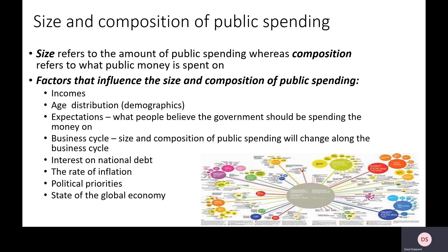Expectations also matter — what people believe the government should be spending money on. With COVID-19, the expectation is that more money is spent on helping businesses survive lockdowns, on healthcare to help people fight the virus, on improving survival rates, and on rolling out the vaccine. That clearly affects both the size and the composition of public spending, with more money directed towards furlough schemes and COVID-related healthcare services.